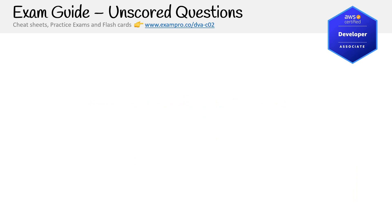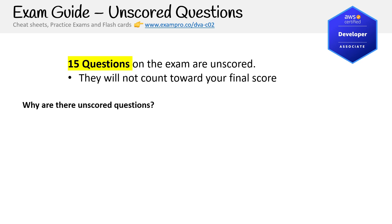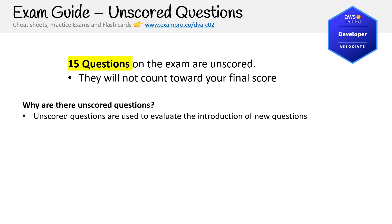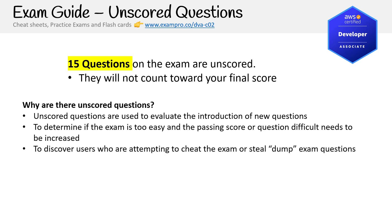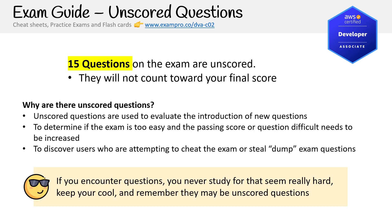Let's talk about unscored questions, because this can stress people out. There are 15 unscored questions and they will not count toward your final score. So why does AWS do this? They use unscored questions to evaluate new questions, determine if the exam is too easy, and can even discover users attempting to cheat or steal exam questions — they can introduce unscored questions that only show up for you, and if those get leaked, they know who the leak is. If you encounter questions you've never studied for that seem really hard, keep your cool — they may be unscored.